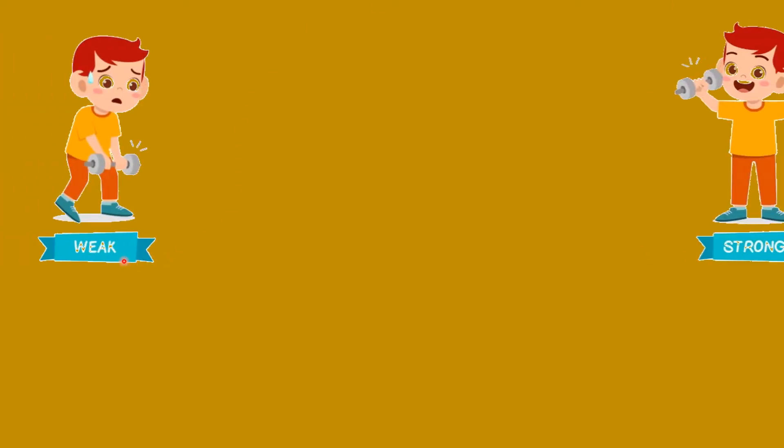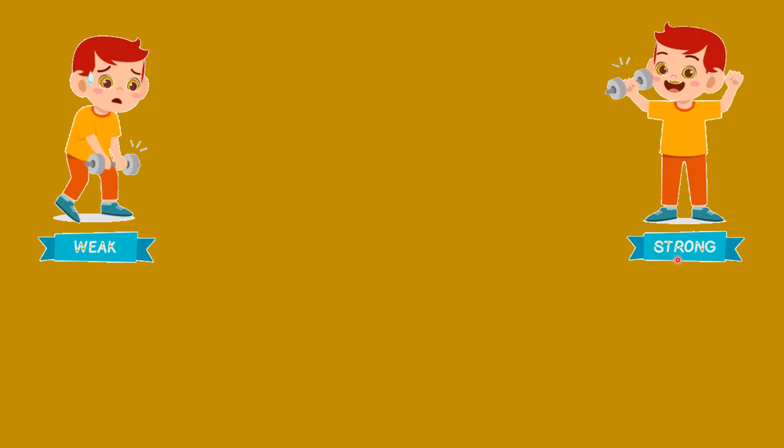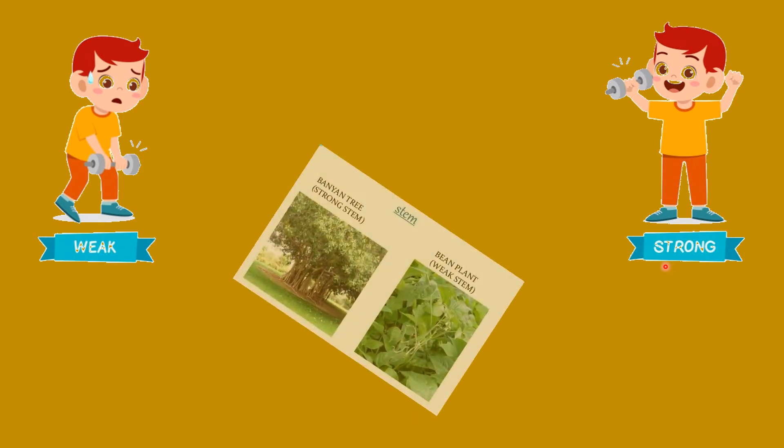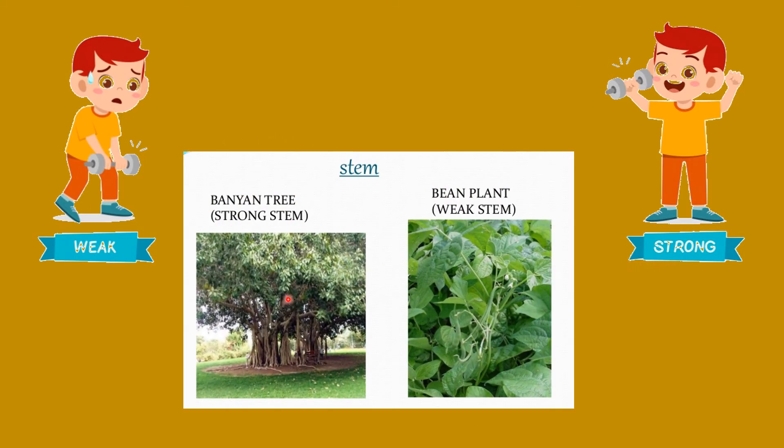Weak. Strong. The opposite of weak is strong. This banyan tree has a strong stem, but this bean plant has a weak stem. Weak means you are not very strong. It is the opposite of strong. Kamzor. In Hindi, you would say kamzor. But the word strong means you have a lot of takat. You have a lot of strength or you are strong at something.